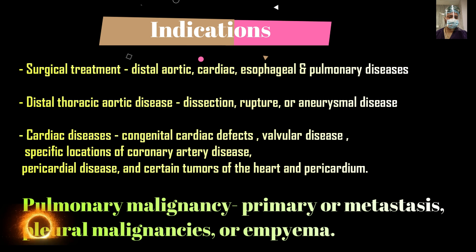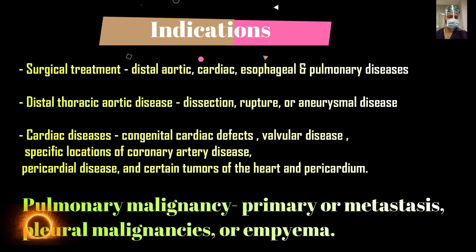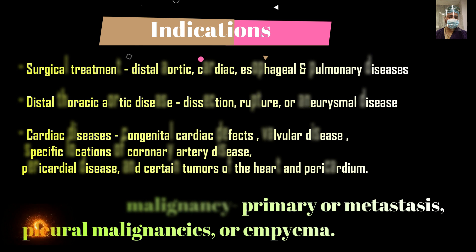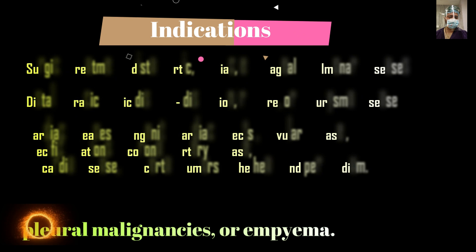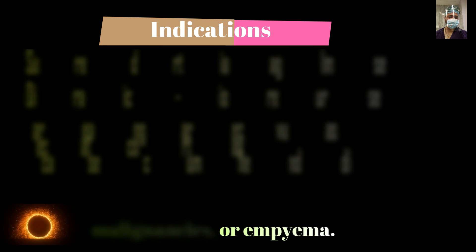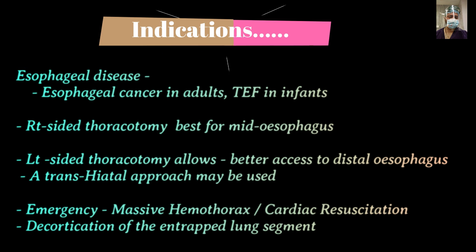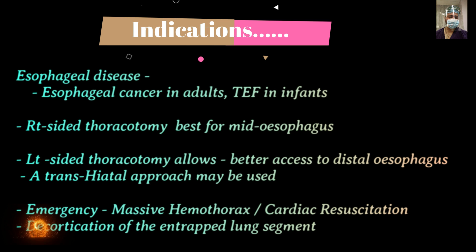The cardiac and thoracic indications are mainly under the domain of cardiothoracic surgeons. We as general or GI surgeons will be called upon to do thoracotomy for malignancy of the esophagus or for trauma. In adults, esophageal cancer is one of the most common indications, and tracheoesophageal fistula in infants.